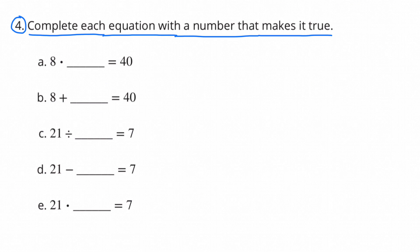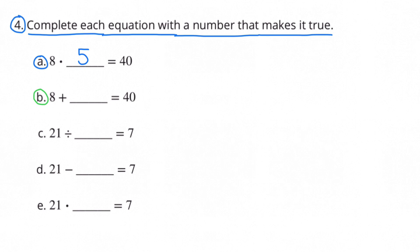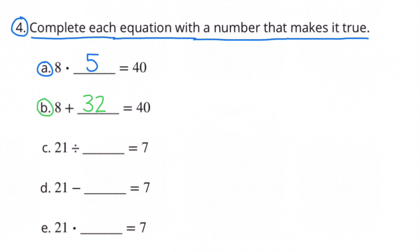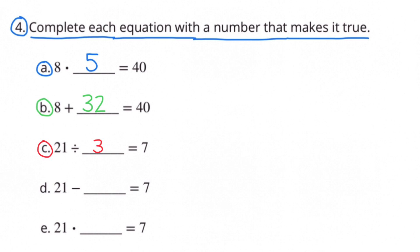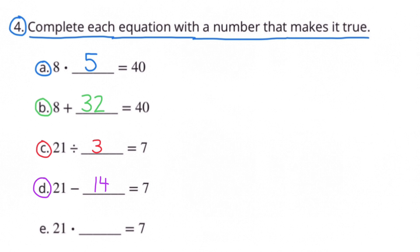Number 4: Complete each equation with a number that makes it true. A: 8 times what number equals 40? 8 times 5 equals 40. B: 8 plus what number equals 40? 8 plus 32 equals 40. C: 21 divided by what number equals 7? 21 divided by 3 equals 7. D: 21 minus what number equals 7? 21 minus 14 equals 7.